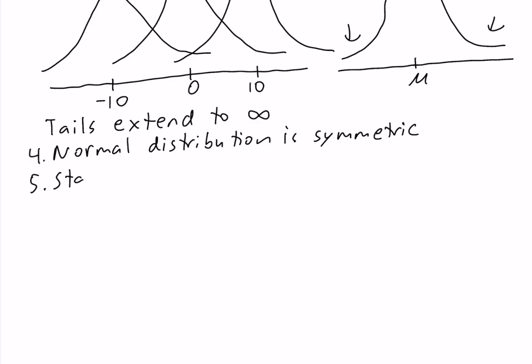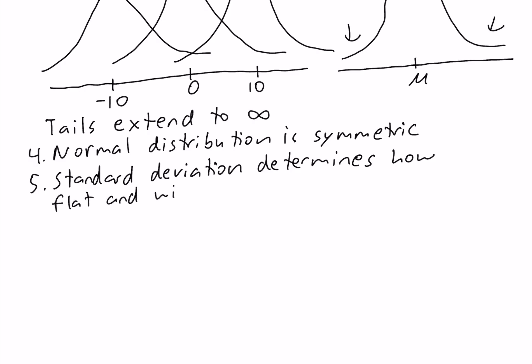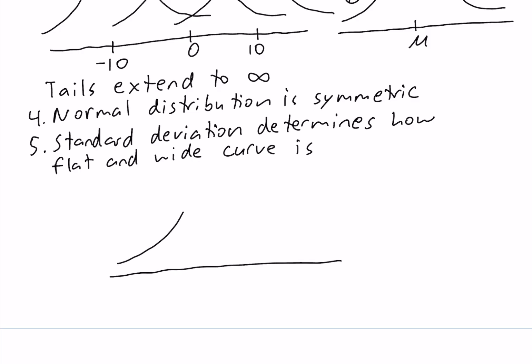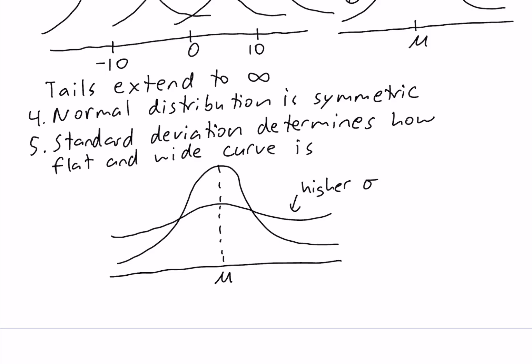The standard deviation determines how flat and wide the curve is. If we look at two normal distributions with the same mean, their only difference is the standard deviation. The one that is flatter and wider has the higher standard deviation, because standard deviation measures the spread. If the standard deviation is higher, the values of the random variable are more spread out, so the curve is wider.